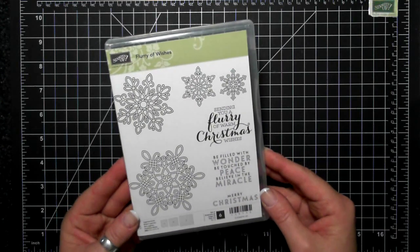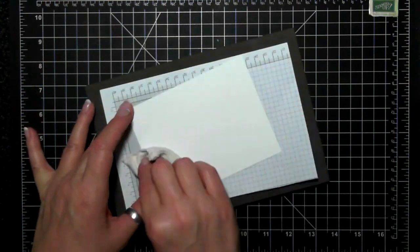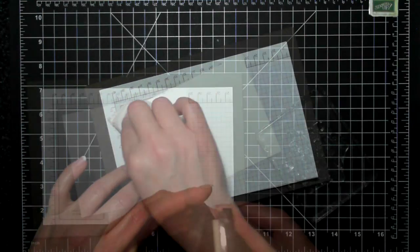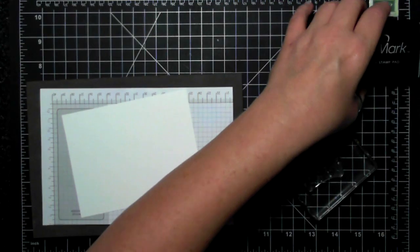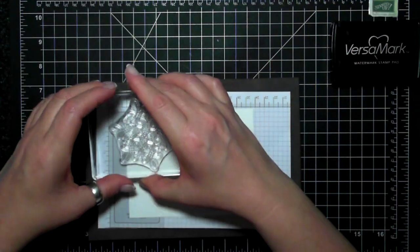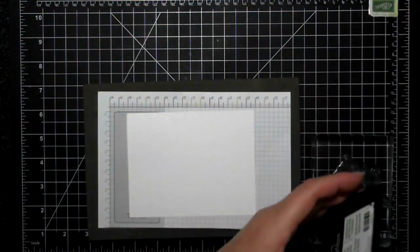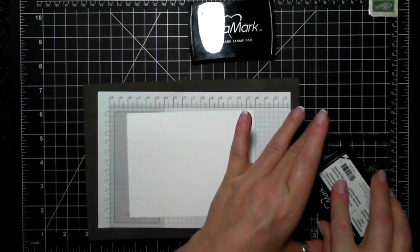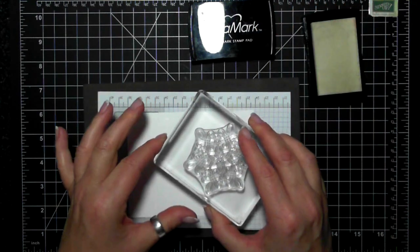Hi everyone, it's Suzanne here. Today's card will be featuring the Flurry of Wishes stamp set. I'm going to be heat embossing with clear embossing powder the snowflakes from this set. I really love the snowflakes - they have a Celtic feel to me. They're just really beautiful and unusual, and I like that. So I am randomly stamping all over this piece of whisper white.